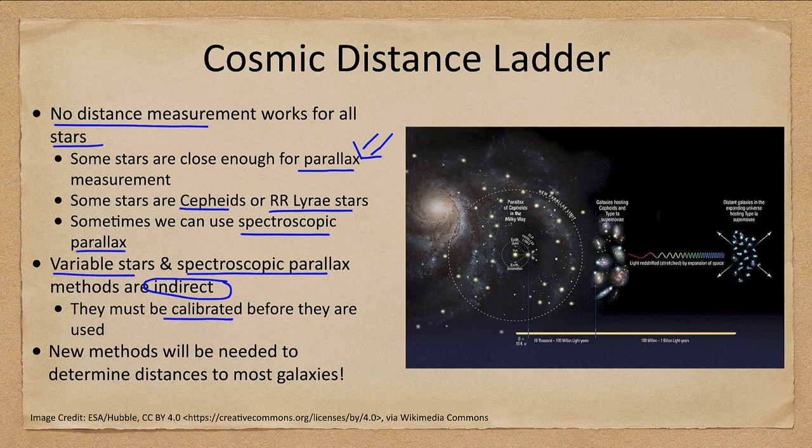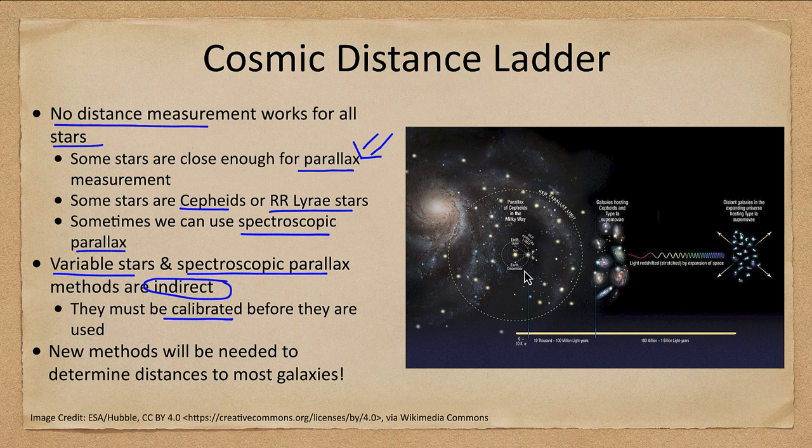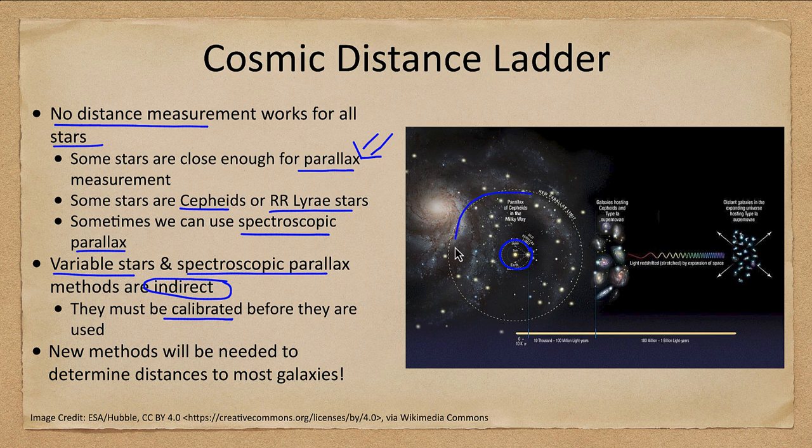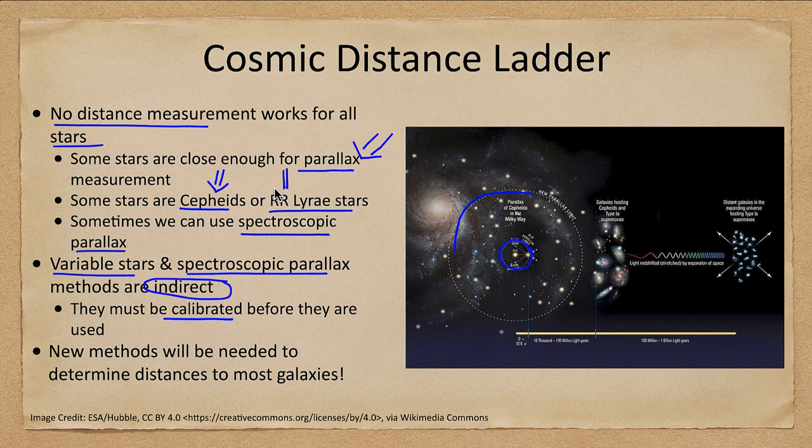Parallax allows us to determine distances directly. We had an old parallax limit very close to Earth. Now with Gaia, we've got a much larger parallax method, which allows us to better calibrate things like Cepheids and RR Lyrae stars. So we can get these better calibrated to determine distances.